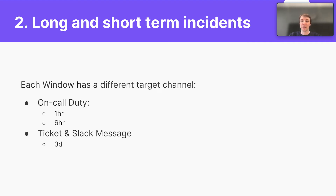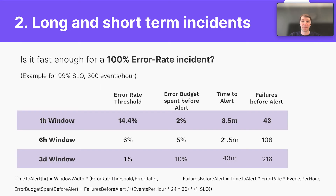Each window triggers a different alerting channel. The one-hour and six-hour windows call the on-call duty, while the three-days window creates a ticket and posts a Slack message. You might ask whether the alerting is fast enough — and we can actually calculate this. For a 99% SLO with 300 events per hour and a full outage at 100% error rate, the one-hour window will notify us in eight minutes. The six-hour and three-days windows will notify you later.